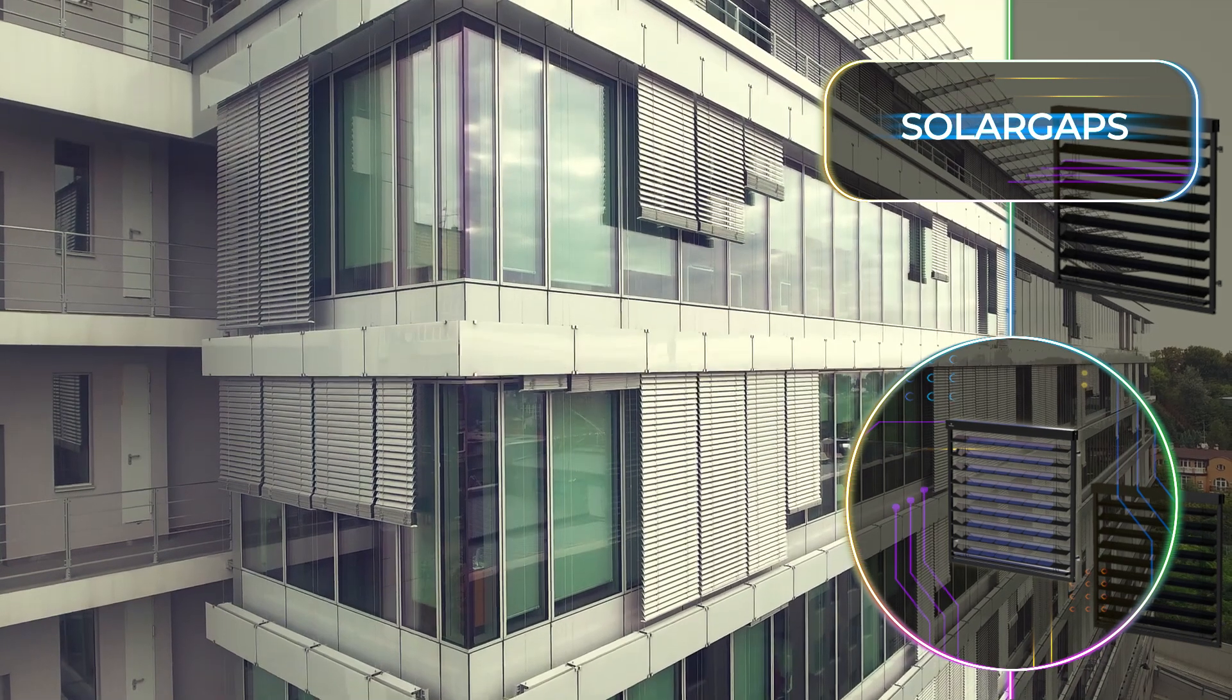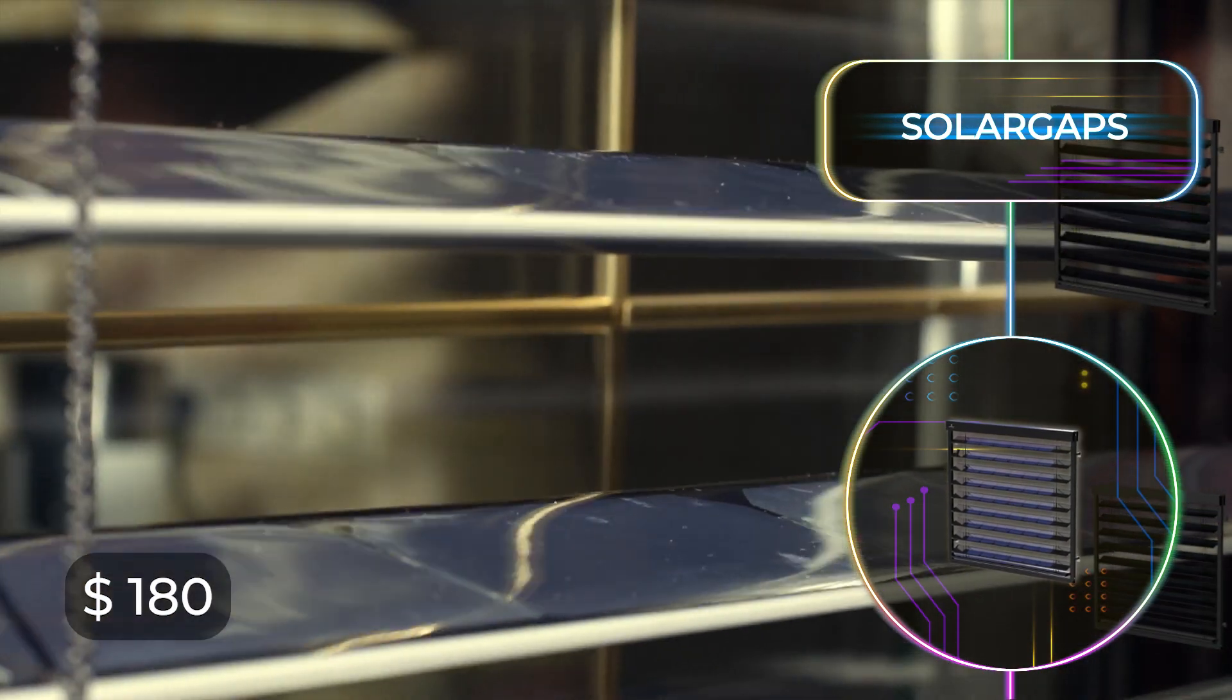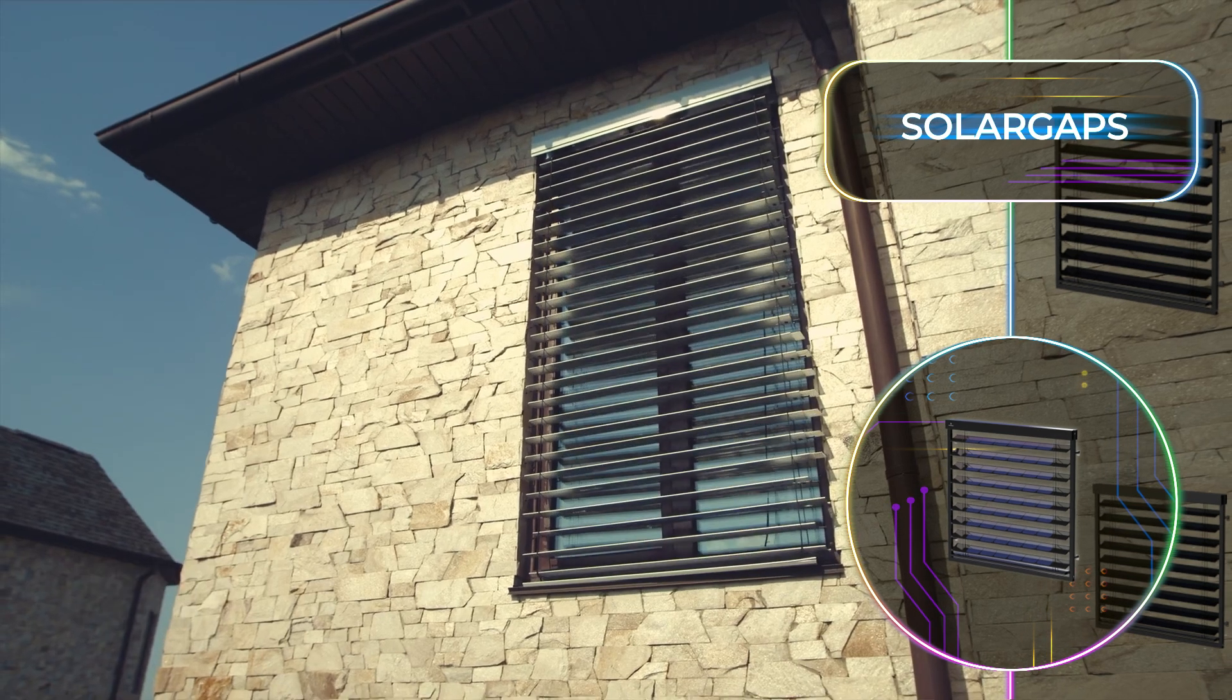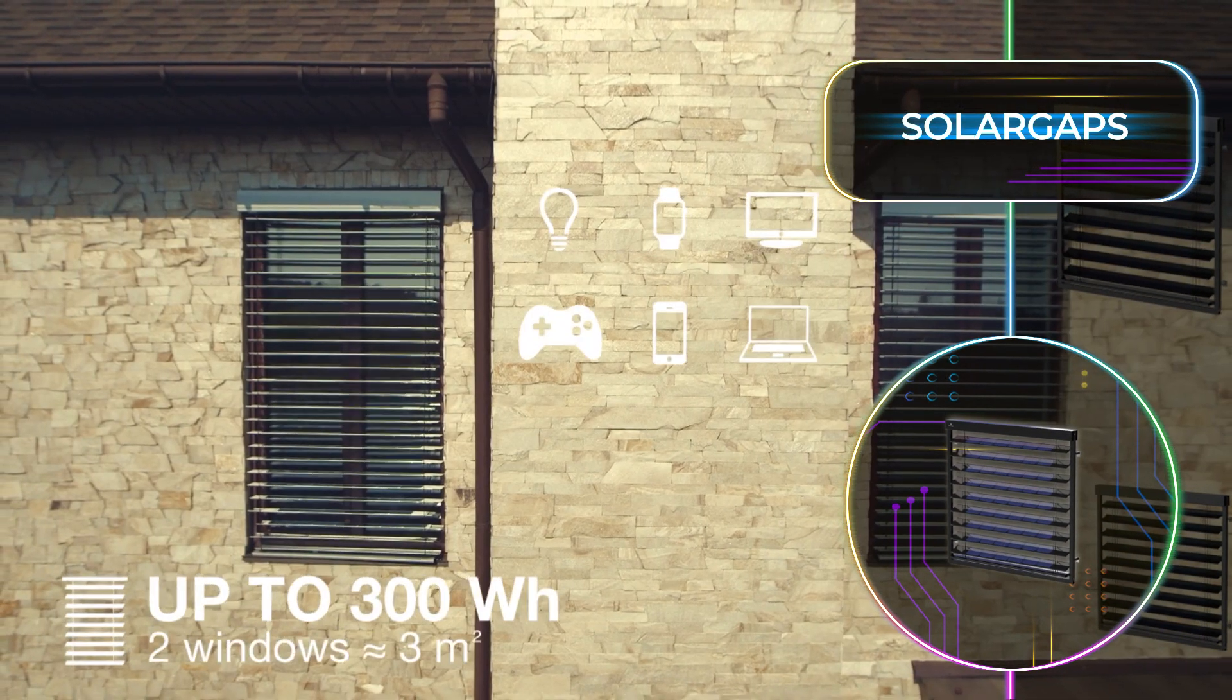The cost of installing these innovative blinds is $180 for each square meter of window area. Assuming you have two average-sized windows that cover about 3 square meters in total, they can produce up to 300 kilowatt hours.